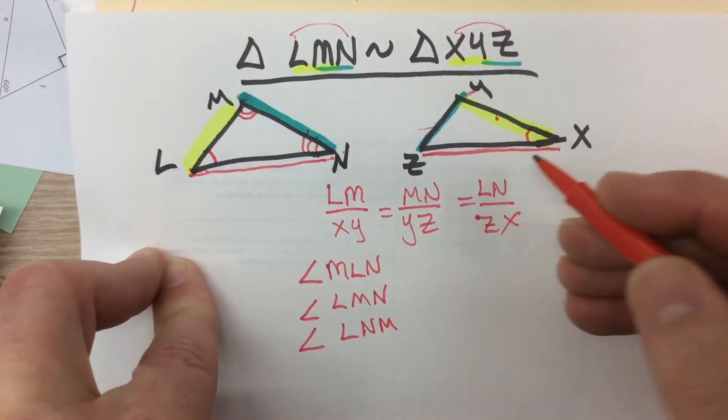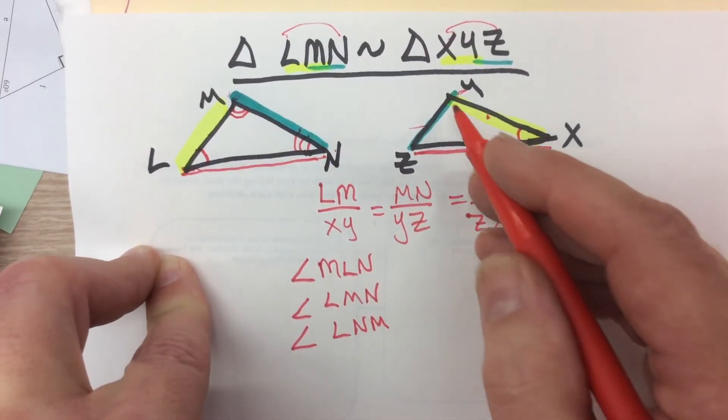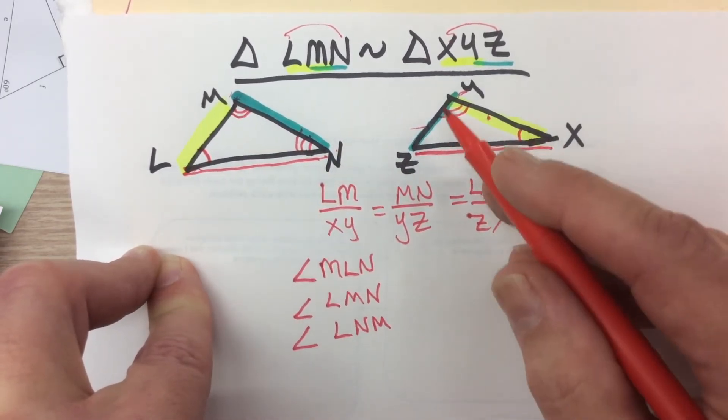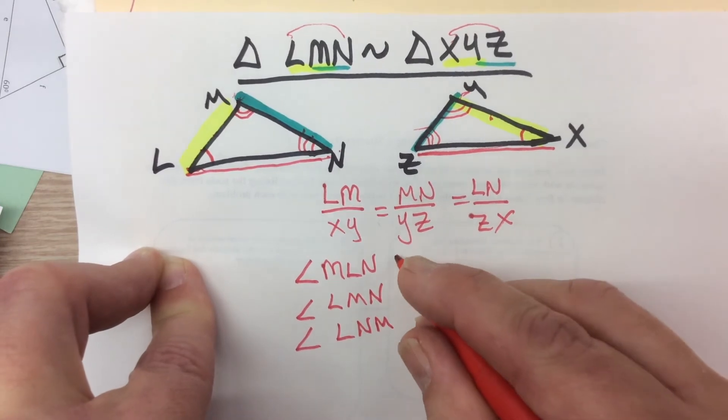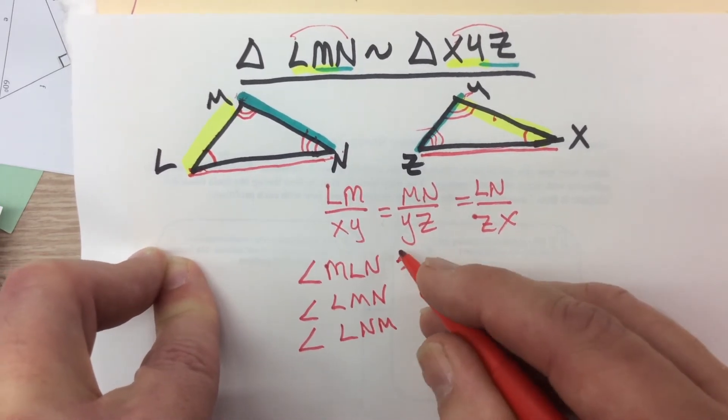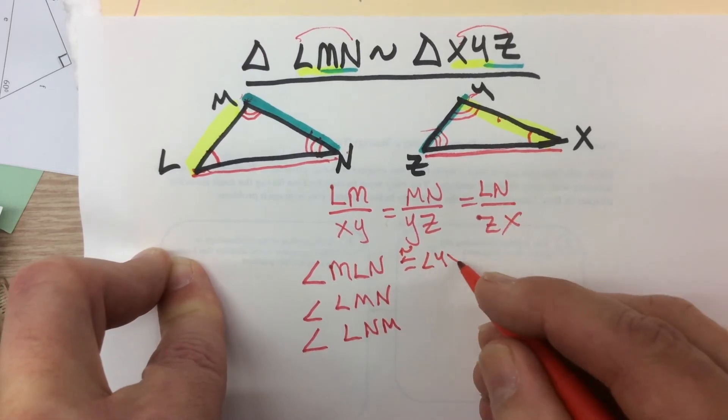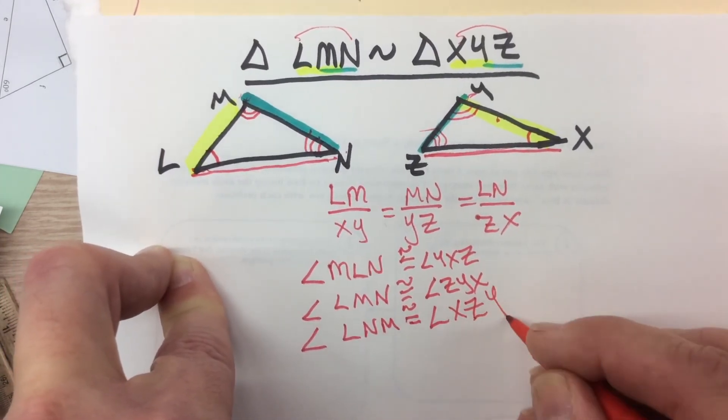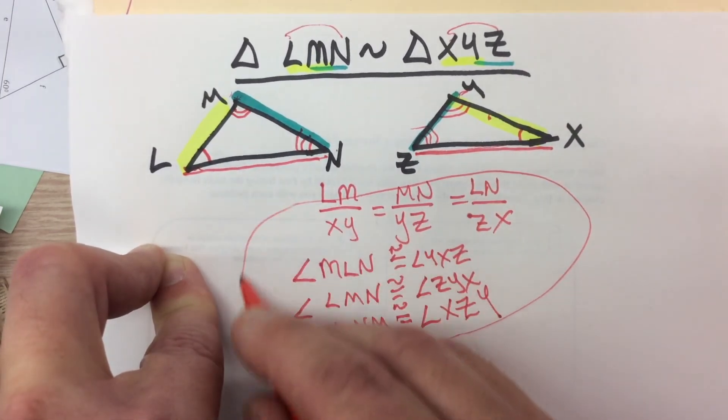And by the same token, the place where the yellow and green sides meet, and the place where the red and the green sides meet, those are all going to be the corresponding angles. And they are congruent to each other. And these are the pieces of information that you are given by that similarity statement. That's what it means for two triangles to be similar.